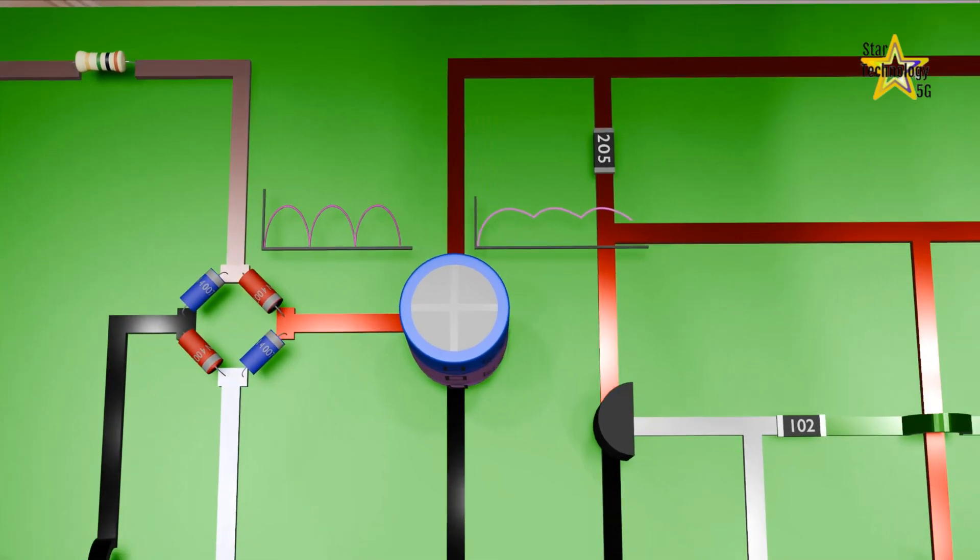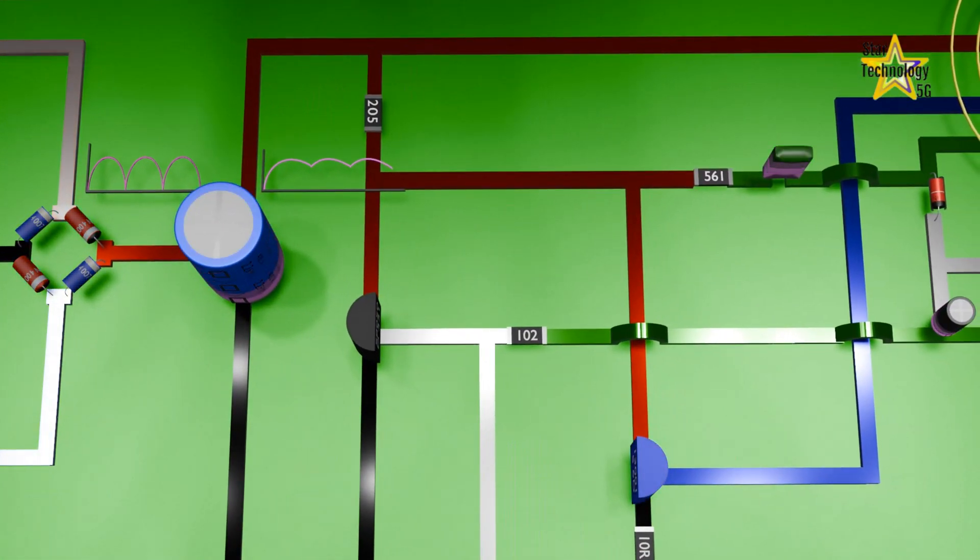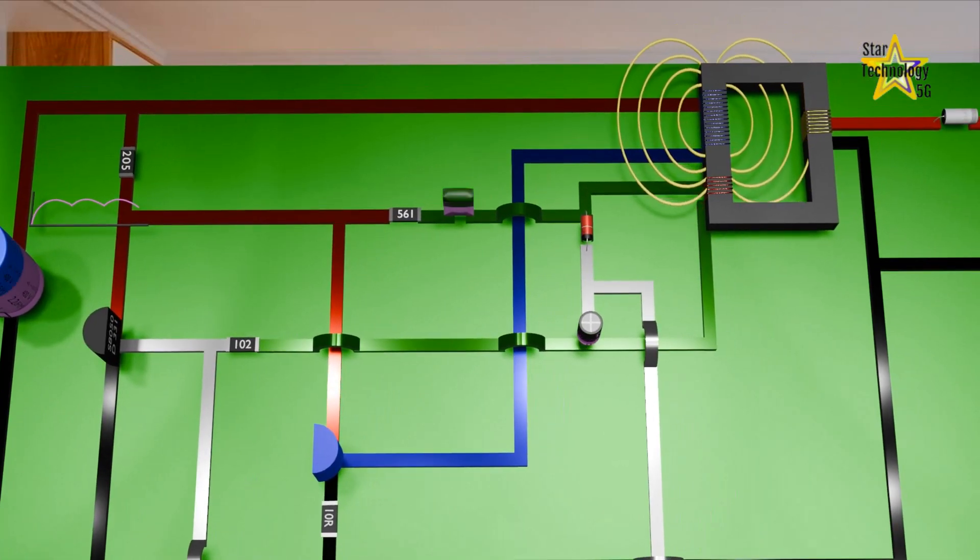Now, this current passes from the 2 megaohm resistor to the base of the T1 transistor to turn it on. This transistor isn't fully turned on, because of the resistance it turns on partially. Due to the partial turning on of the transistor, a low current passes from the primary winding of the transformer.